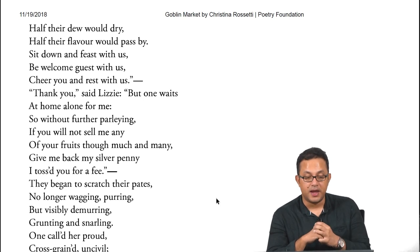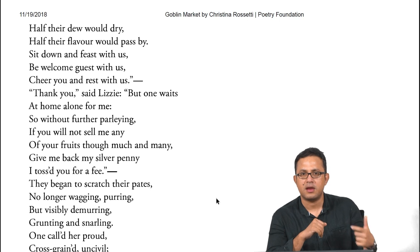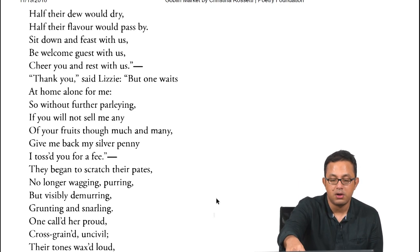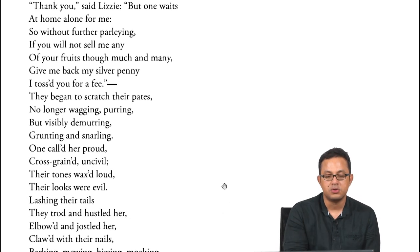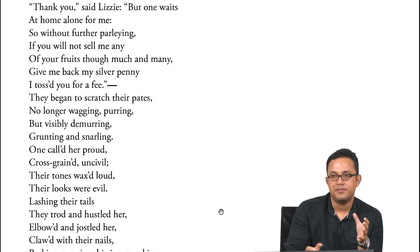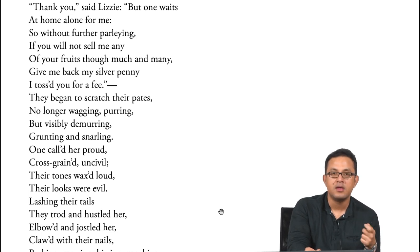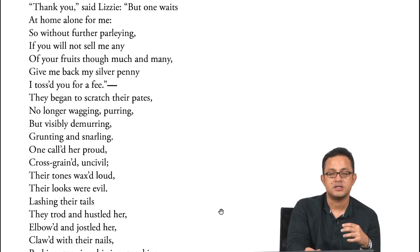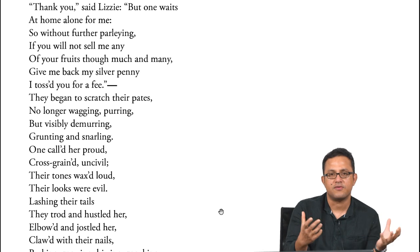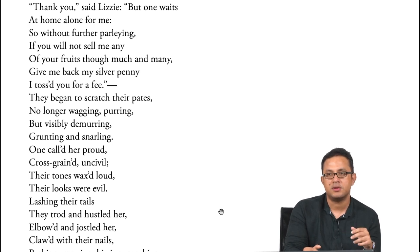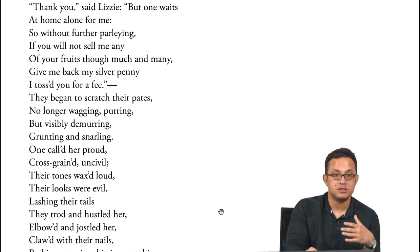The goblin men began to scratch their heads, no longer purring but visibly demurring — and that made them angry and cross, 'grunting and snarling. One called her proud, cross-grained, uncivil, the tones waxed loud, the looks were evil.' This is a very typical male response to a female with agency. Lizzie walks in with a penny — the object of agency — and refuses to enter into a sexual exchange with the goblin men, as a result of which they apply stereotypical negative descriptions: proud, uncivil, cross-grained. Because she is not being the demure, yielding, sexualized female — she is a female who possesses agency, which undercuts the entire masculinist invasion of the female space.